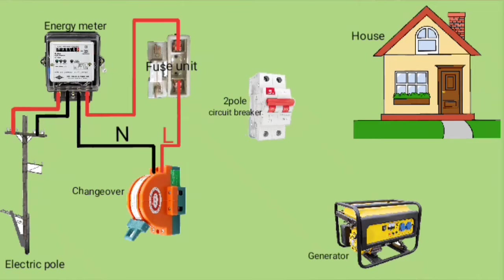After that, I will pick live and neutral from the generator to the changeover, and from the changeover to the 2-pole circuit breaker, which will supply load to the house.